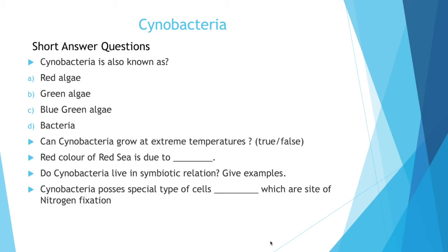Next question. Do cyanobacteria live in symbiotic relationships? Give examples. The answer is yes. Cyanobacteria can live in symbiotic relations. Example, cyanobacteria has an algal partner in lichens with fungi. Then in water ferns azola, anabina is there. In anthoceros thallus also we can see nostoc colonies.